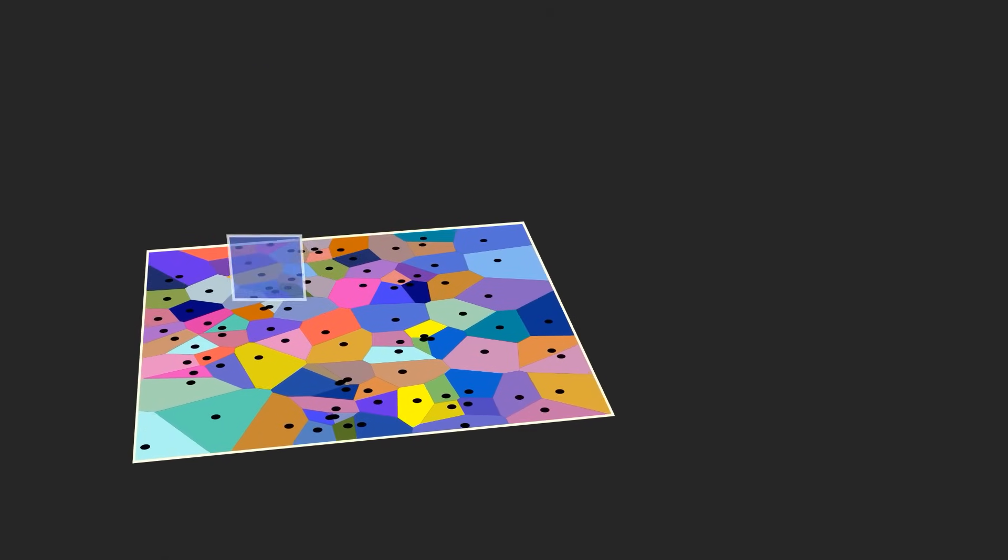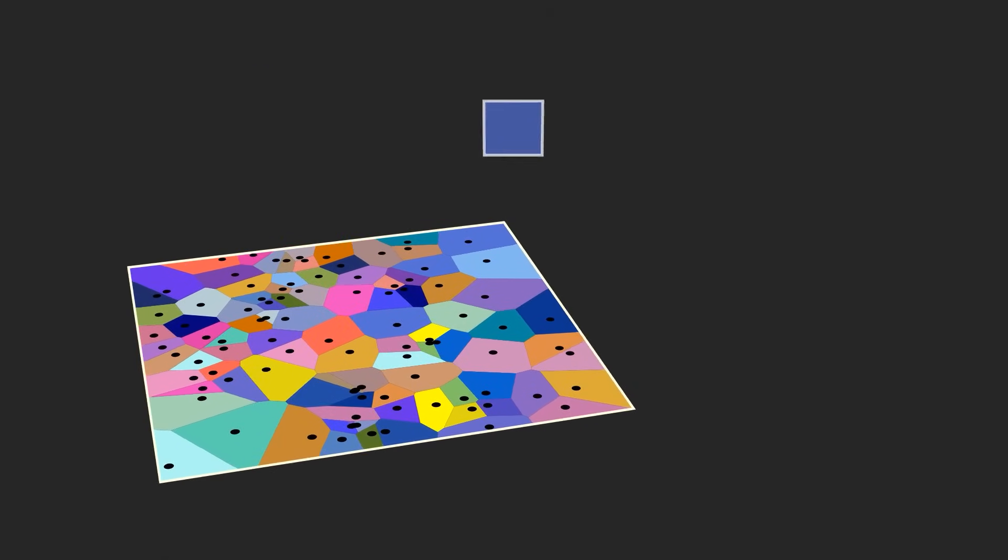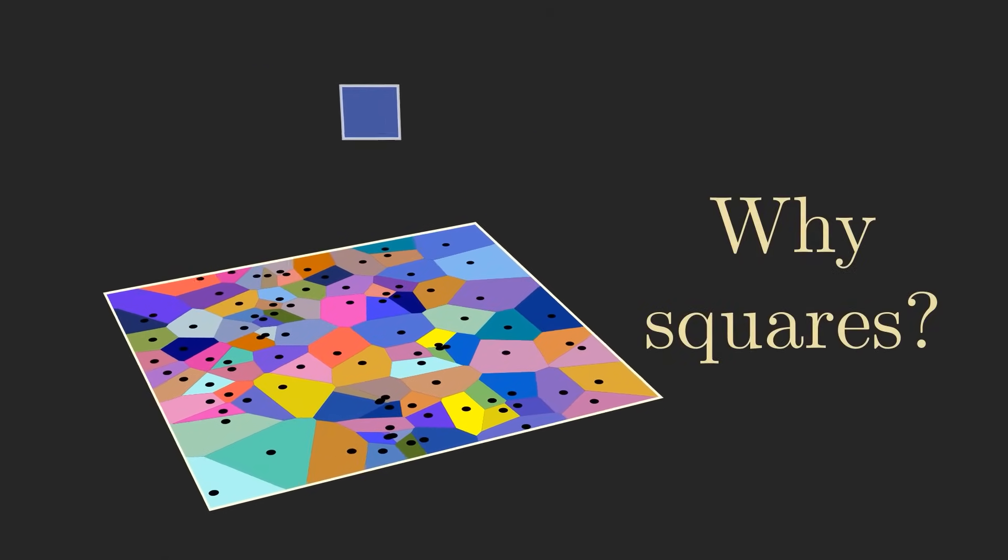So why is it that the approximation we made using squares seems to represent the behavior of random Voronoi cells so closely?